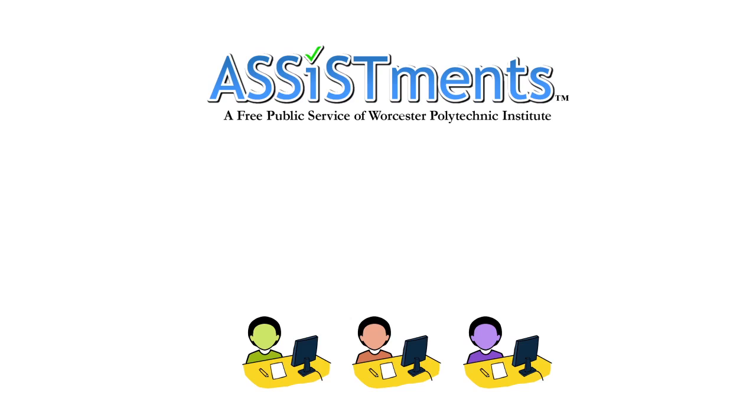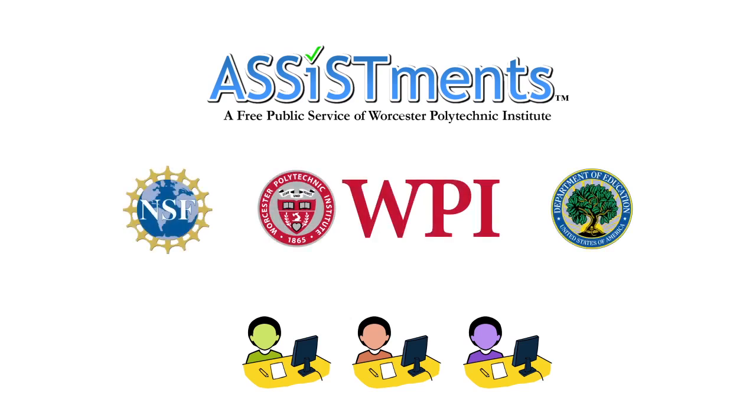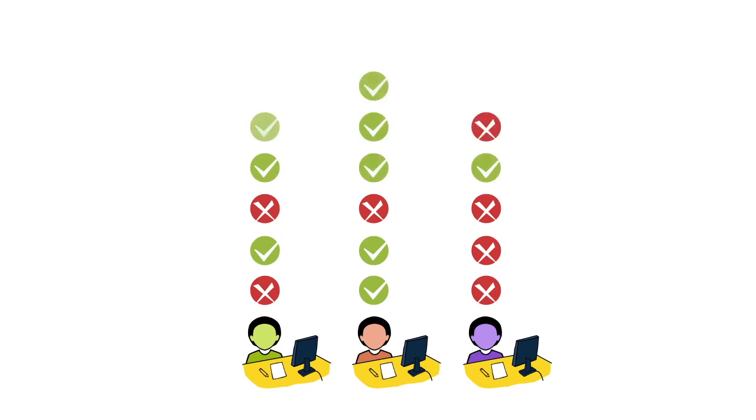Assistments, a free online service brought to you by Worcester Polytechnic Institute and others, has made it possible for students to receive immediate feedback so they don't make the same mistakes over and over again as they work on their homework.